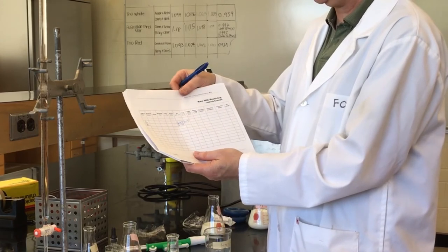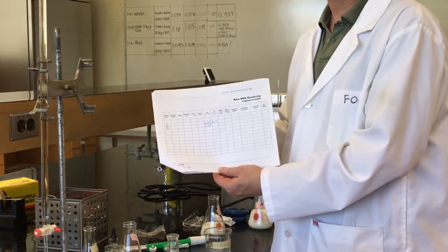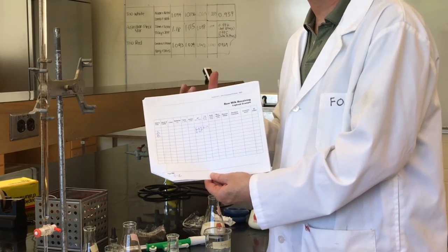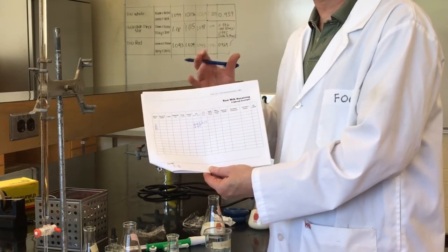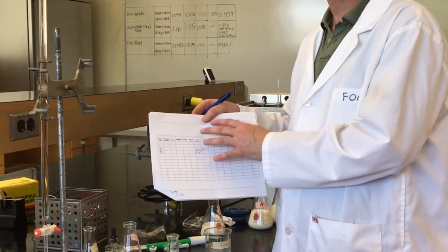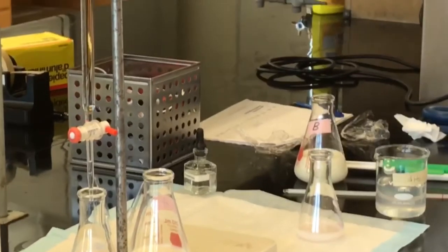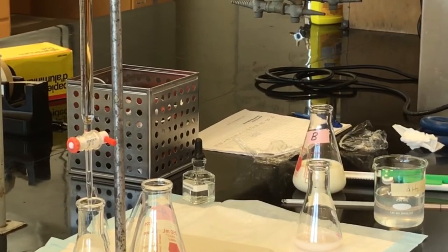Turning to our documentation page, which is Raw Milk Receiving, under TA for sample A, I get 0.17. Now you'll see the range is listed at 0.14 to 0.17. Again, I just want to emphasize that these are not regulatory standards set by the government. These are internal standards, so your facility may have numbers that are a little bit different.